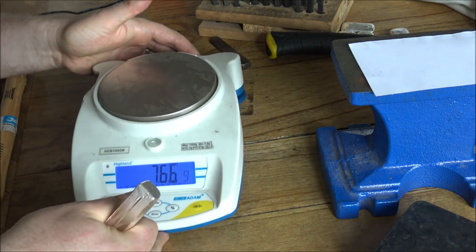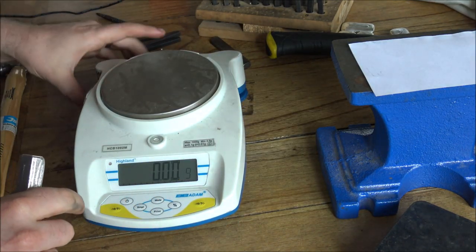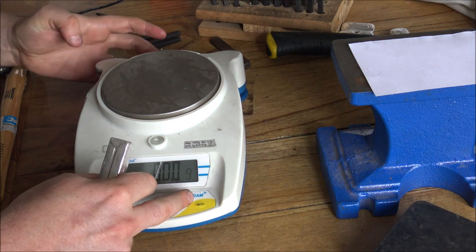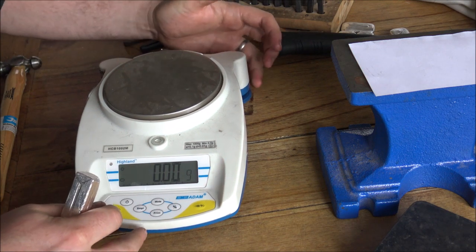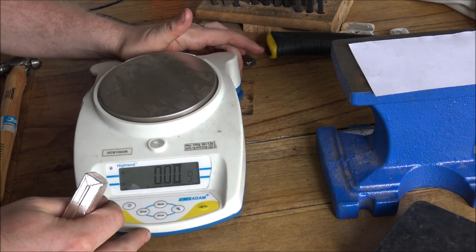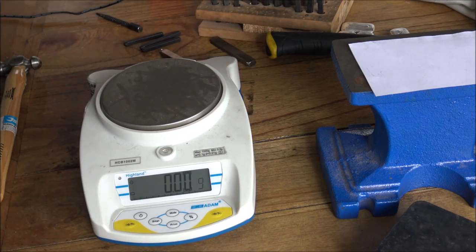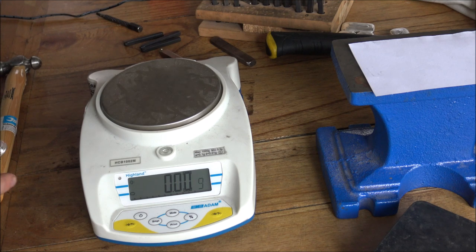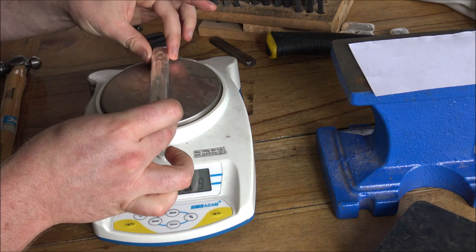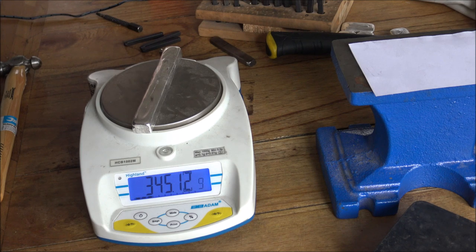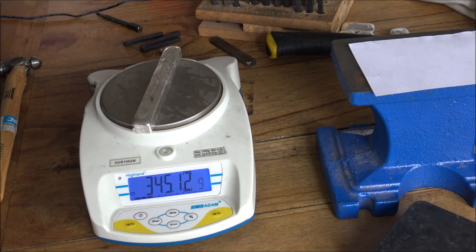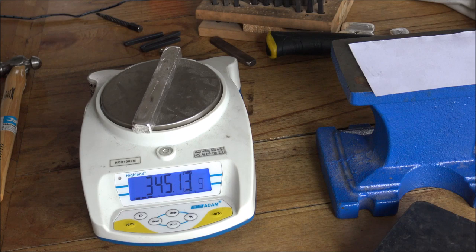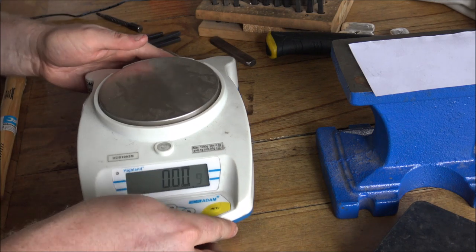So first, let's give it a weight. Now we are using some very fancy looking scales here. These are made by Adam Equipment and they are very accurate. They're also trading standard approved and calibrated. So for us in the UK, if we're selling anything by weight and measure, you have to have accurate scales. So we have got 345.12 grams. So 345.12 divided by 31.105 gives us 11.095 ounces. So 11.09 is the weight that we're going to stamp.